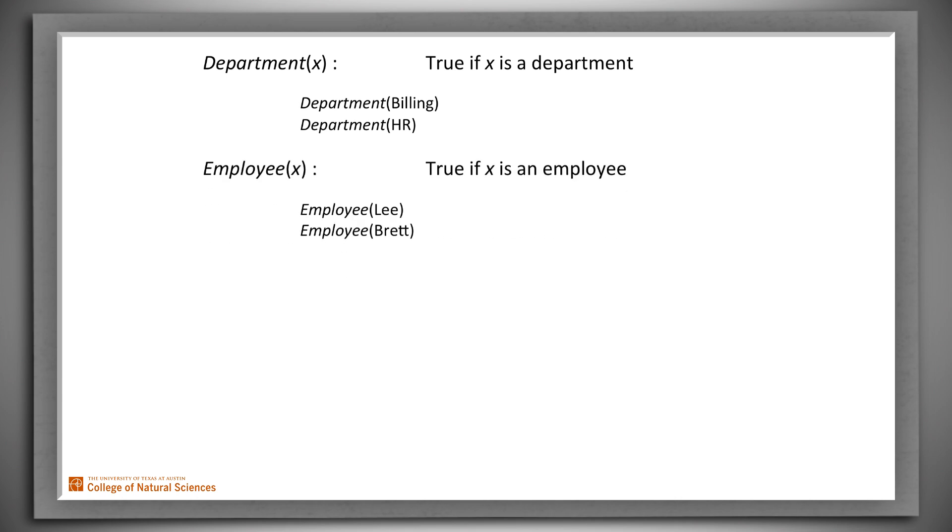We've got that Billing is a department and HR is a department. Similarly, we can define the predicate Employee and we can enter some facts about employees. So we have Employee(Lee) and Employee(Brett). We can also define predicates that assert relationships between and among objects. So let's define Works and enter some facts about who works where. So Lee works in Billing and Brett works in HR.